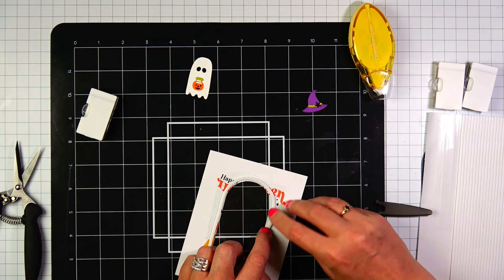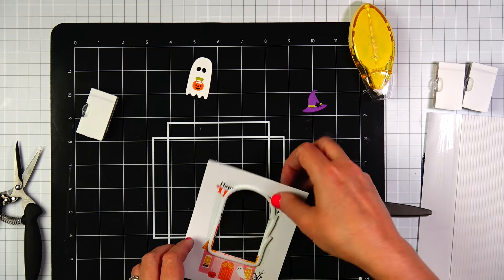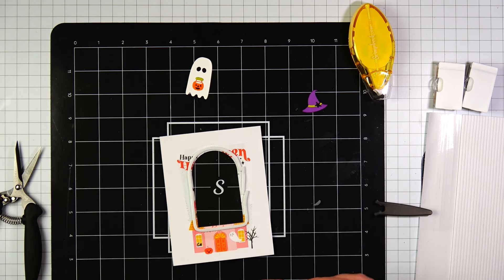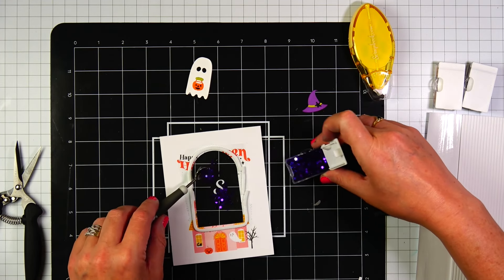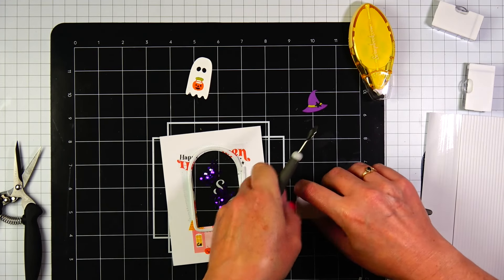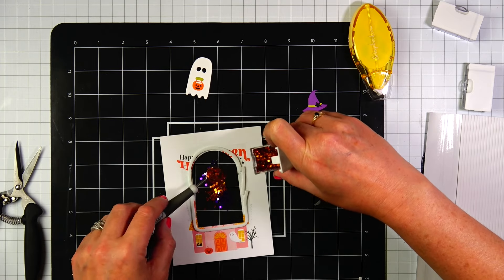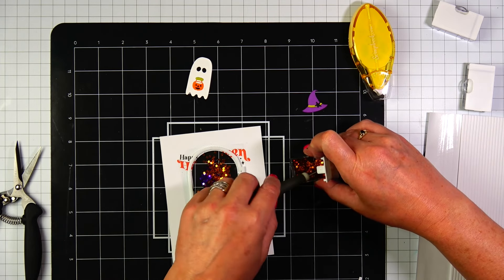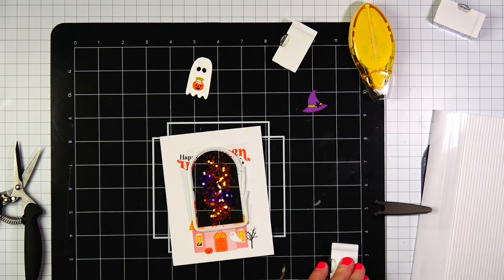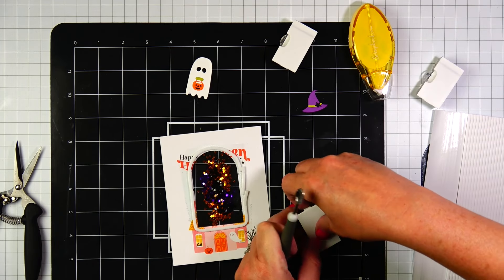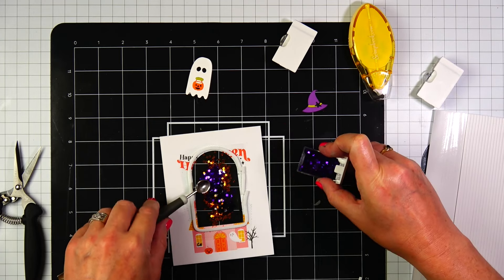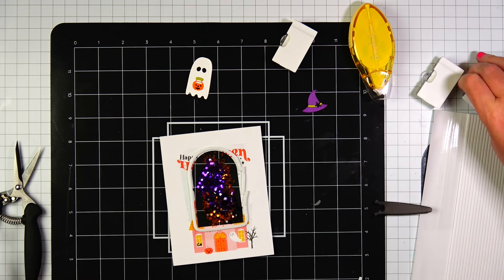Once I have all the foam on the back of the panel, I'm going to fill the window with the Pretty Pink Posh stars. And I am using a Nouveau craft spoon so I can pay attention to the amount of embellishments that are going into the window. And I'm using black, gold, and purple. I'm doing a nice mixture but I don't want to fill the window up too much. I want the embellishments to be able to shake.